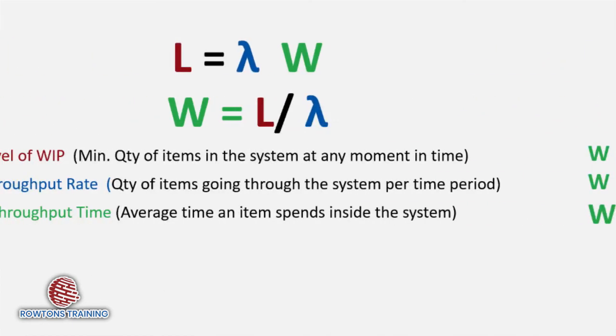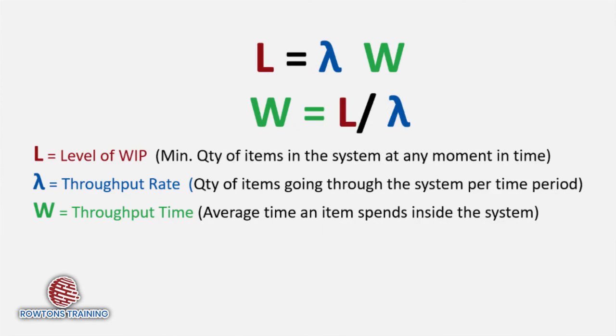So what does this tell us? Well let's imagine in this situation what we'd really like to do is reduce the throughput time of our average customer. Remember this time includes, in this example, the waiting time on the telephone line to be answered and the time actually spent talking to them. Well, there's two things this formula says we can do. The first, reduce L, the level of work in progress we have in our system.